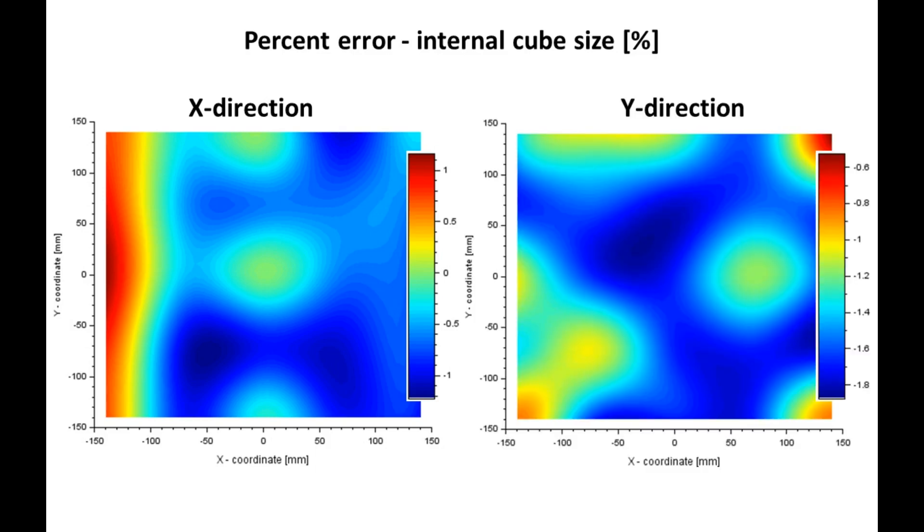We surprisingly see that depending on location, the dimension is either smaller or larger with respect to nominal value. Again, I should avoid printing on the left side of the heated bed.